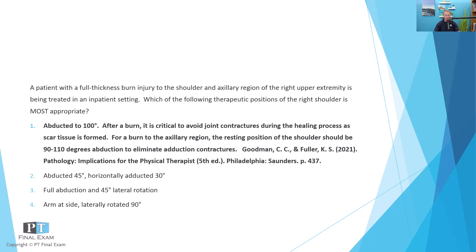So the correct answer is option number one: abducted 100 degrees. You'll want to keep the patient in a somewhat abducted position. The reason is you don't want the scar tissue to contract the joint, thus preventing adequate range of motion of the shoulder. This is all according to Goodman's Pathology, but the premise is you need to have them in a somewhat comfortable position. You would not want full abduction as the skin would likely not be able to tolerate that, but you do want adequate abduction so they don't get a contracture in the axillary region.